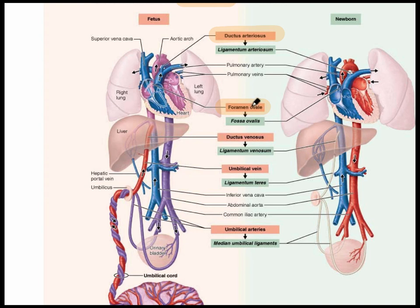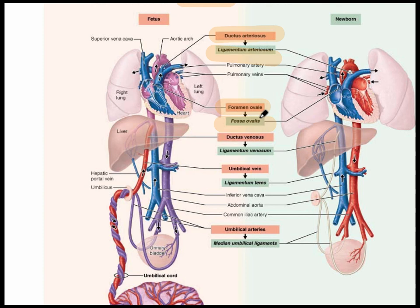At birth, for the foramen ovale specifically, the pressure in the left atrium forces closure of this hole in the interatrial septum, leading to the fossa ovalis. What you see in green represents what's in the newborn. The ductus arteriosus leads to the ligamentum arteriosum, and the foramen ovale, once it closes, forms a depression called the fossa ovalis.